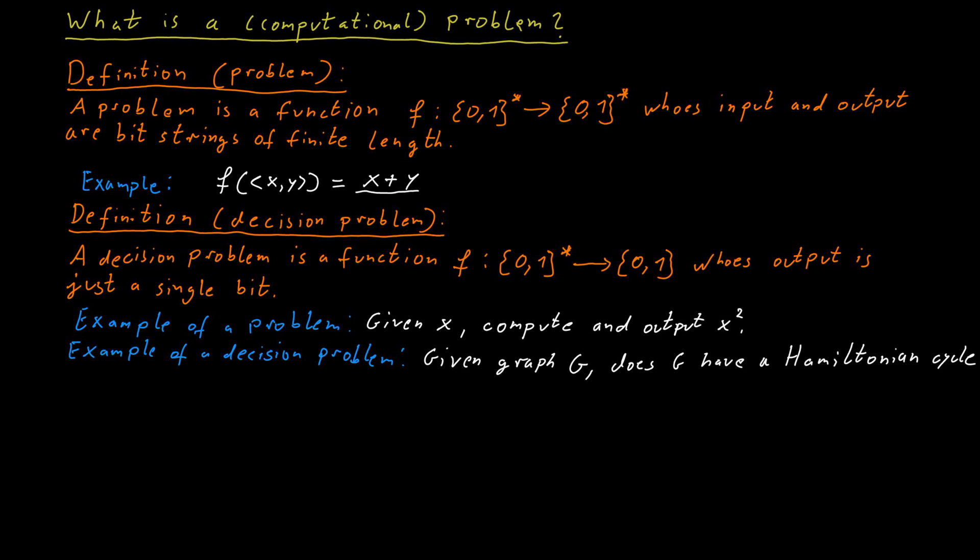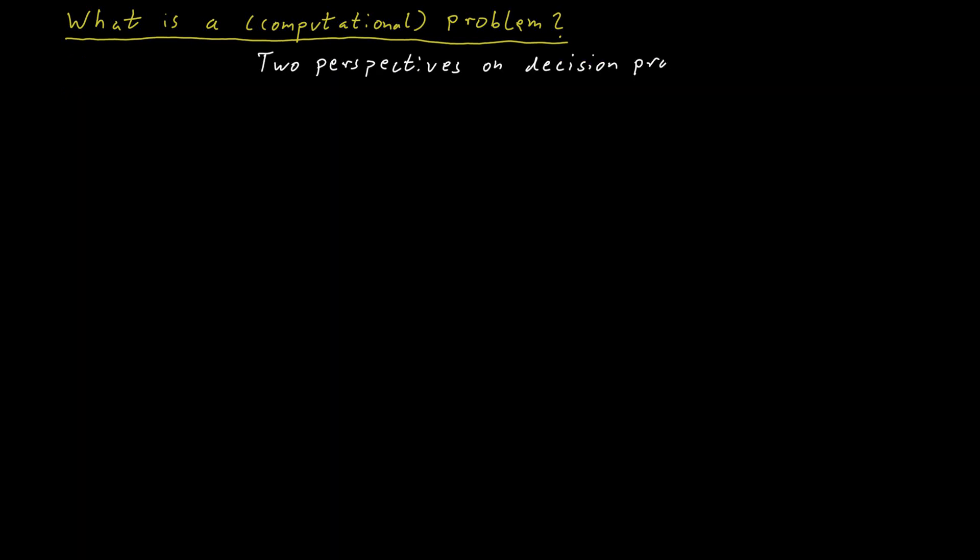For reasons which we will discuss much later, a lot of the time it is actually sufficient to consider decision problems. There's an alternative way of thinking about decision problems. We can think about them as sets. Because in a decision problem, all answers lead to either a yes response or a no response. What we can do is we can just group together in a set all of the inputs for which the correct answer is yes. And then everything that's not in that set has a correct answer of no.